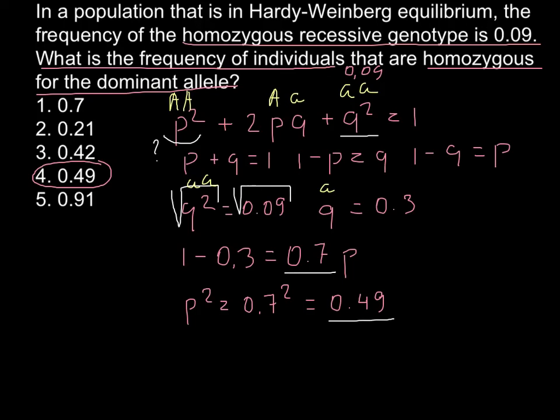And also, if the question would be to find the frequency of the heterozygous, you can use this part of the formula and multiply 2 by P and Q, and we know that P is 0.7 and Q is 0.3.